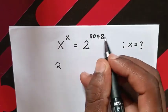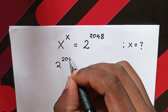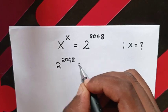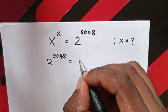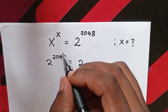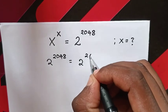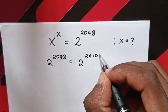From 2^2048, it will equal 2 power of this divided by 2, which is 2 times 1024.